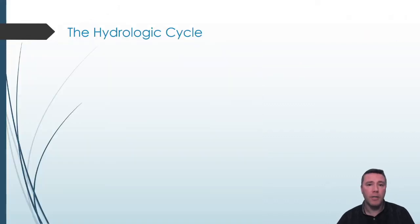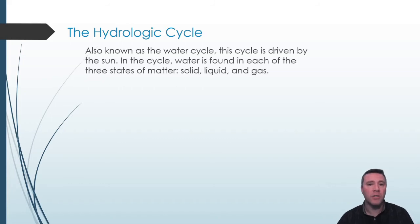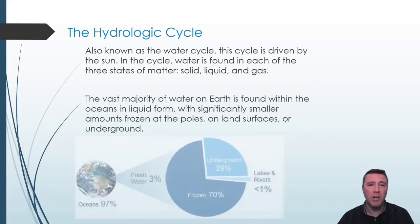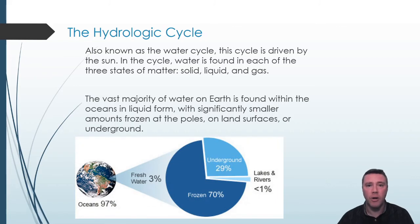Although water is a molecule and not an element, understanding how it cycles is important. Since you first learned about the hydrologic or water cycle in a science class years ago, this is a good opportunity for a quick review. The overwhelming majority of water on Earth is found in the oceans, with only a small proportion — about 3% — existing as fresh water. Most of that fresh water is frozen in the form of glaciers and polar ice caps, and less than 1% of that 3% is fresh water in liquid form on the surface of the Earth.